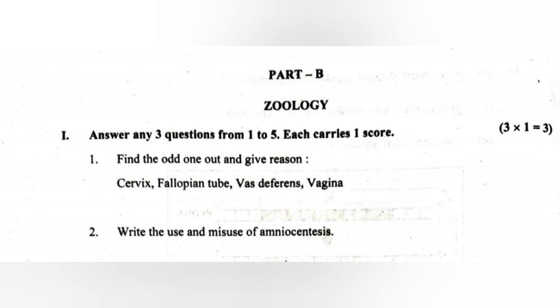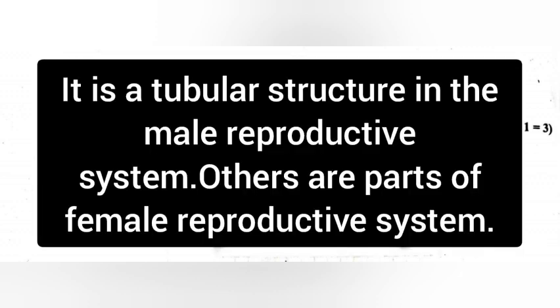1. Find the odd one out and give reason. Cervix, fallopian tube, vas deferens, vagina. Answer: Vas deferens. It is a tubular structure in the male reproductive system. Others are part of the female reproductive system.